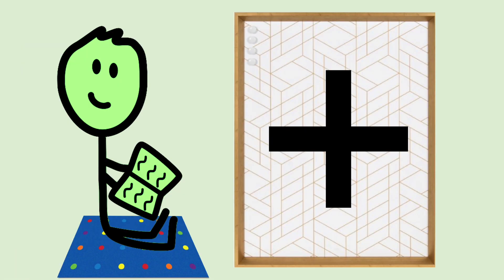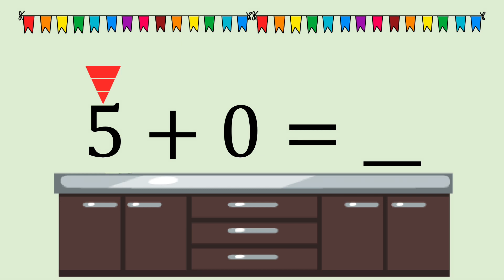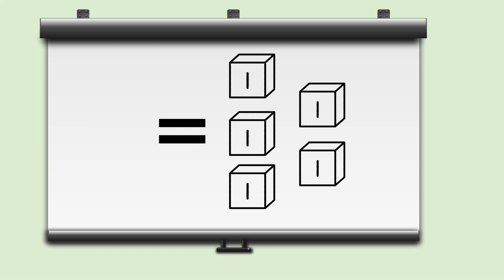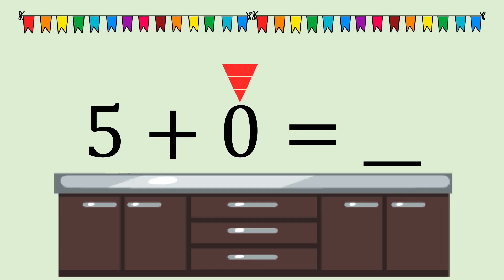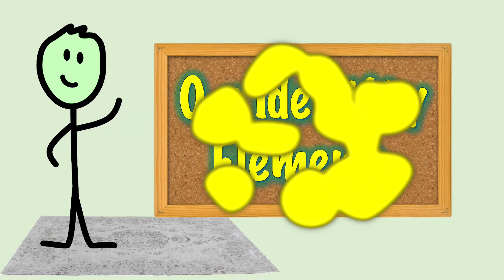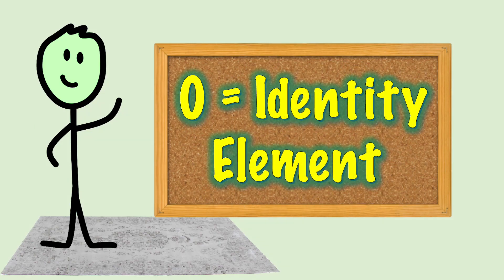Here's an addition sentence: five plus zero equals blank. Because we added zero, or nothing, to the five, the original addend does not change. The sum is five. Zero is called the identity element in addition.